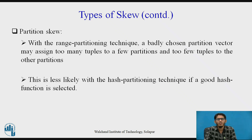The next type is partition skew. With range partitioning, a badly chosen partition vector may assign too many tuples to some partitions and very few to others, making the distribution uneven. Some partitions may have many tuples while others have very few — that type of skewing is called partition skew. This kind of skew is less likely to occur with hash partitioning, provided a good hash function is selected, as a good hash function will help avoid this kind of skew.